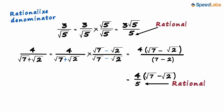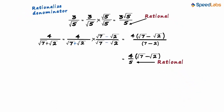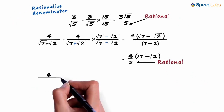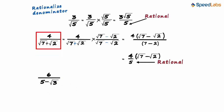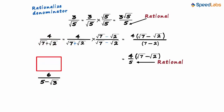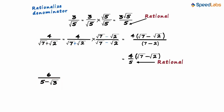Now let's look at the last example: 6 divided by (5 minus √3). This example is slightly different from the previous one. In the previous example, both numbers in the denominator had a radical, while in this example only one number has a radical. But this denominator is still irrational.